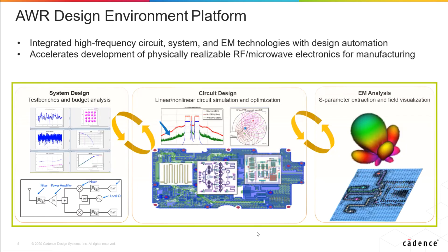If we put AWR into three categories, system design is one of them, where we have VSS, our system simulator tool. That's more of the building-a-radio level, where you're putting components together and using modulated signals to look at things like EVM, CCDF, and ACPR. What we're going to focus on today is circuit design — that's where you have circuit schematics and layouts and the simulation of those schematics.